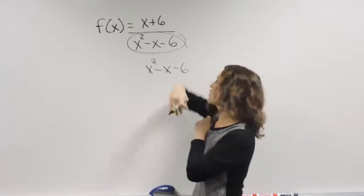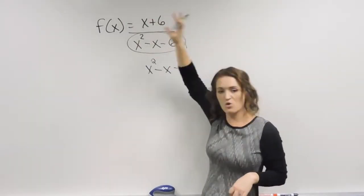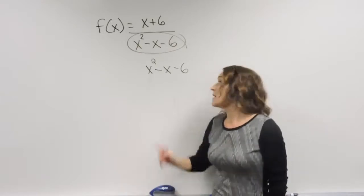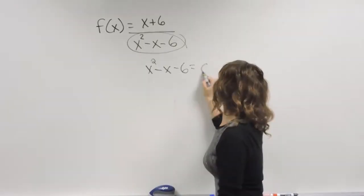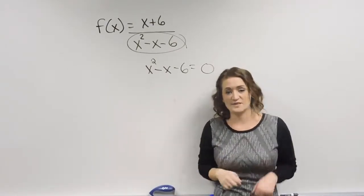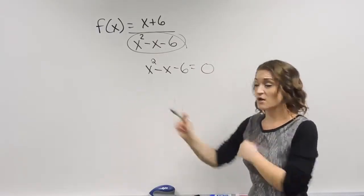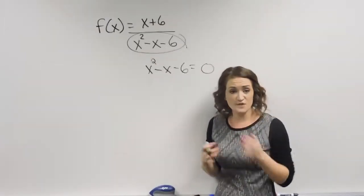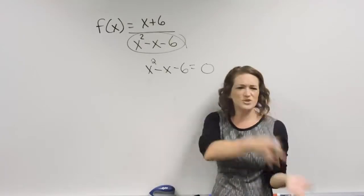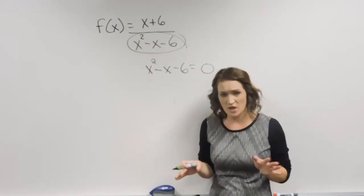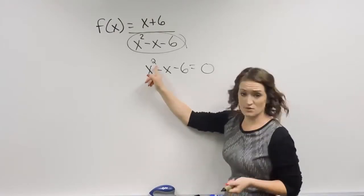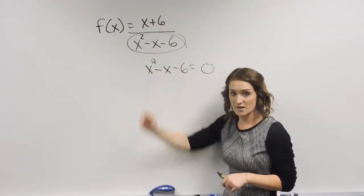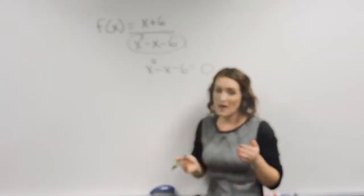For these examples, we don't care what the numerator is — that plays no part. We only care about the denominator. My denominator for this problem is this trinomial. So I'm going to set it equal to zero and solve. Be careful here: depending on what your denominator looks like, sometimes you can just solve an equation by getting x by itself, but anytime you have a quadratic equation, you have to factor it.